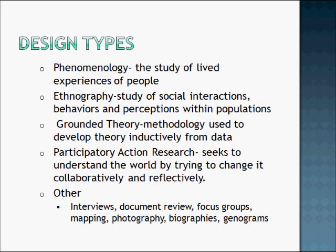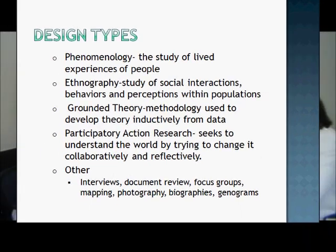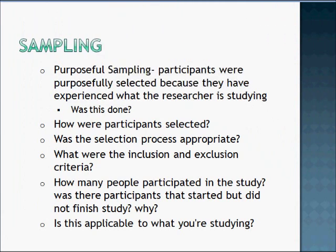Participatory action research seeks to understand the world by trying to change it collaboratively and reflectively. Some of the methods used include participant observation, interviews, document review, focus groups, and other methods like mapping, audiovisual things such as cameras or photography, and biographies or genograms. For sampling, we want to see if purposeful sampling was done — were participants selected because they have an experience the researcher is trying to study? We can look at how participants were selected, what the selection process was, whether there was inclusion and exclusion criteria, how many people were in the study, how many actually finished, and if it's applicable to what you're studying.